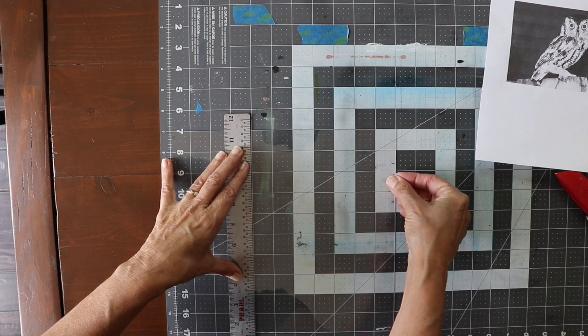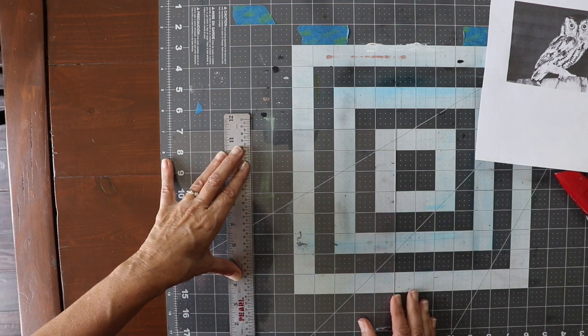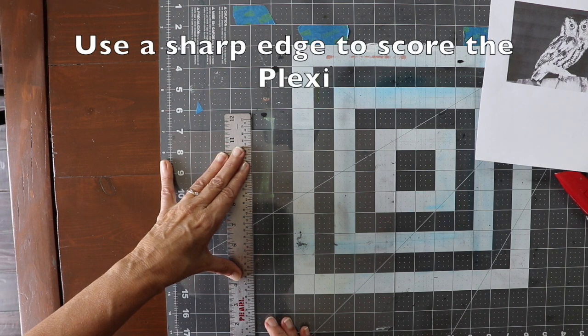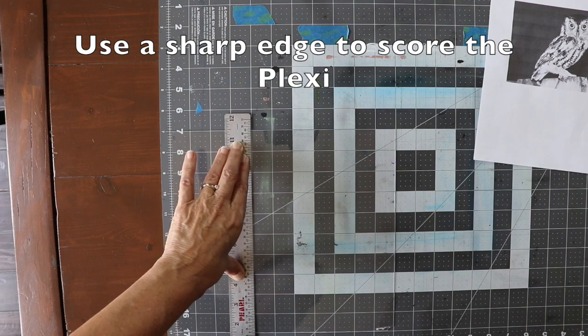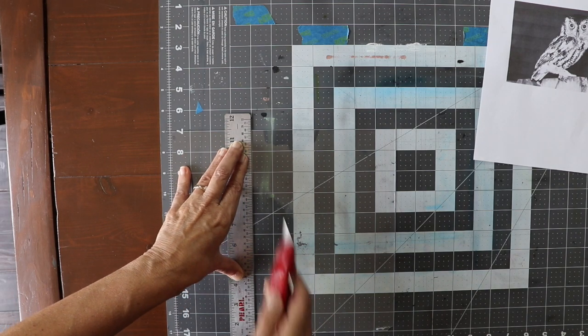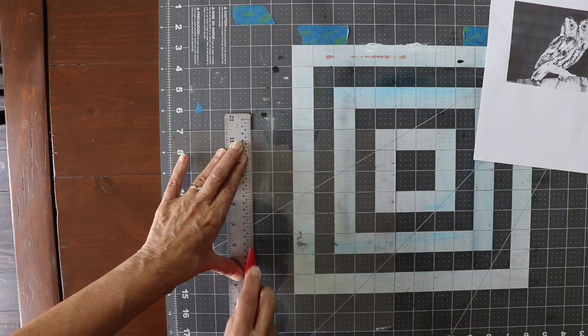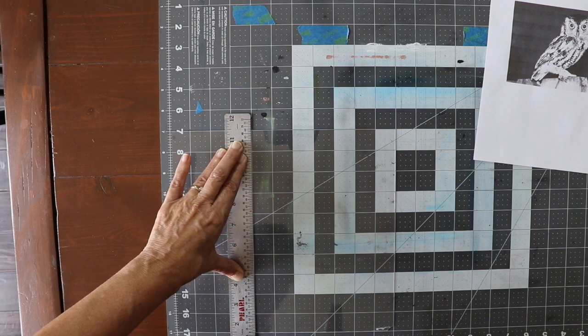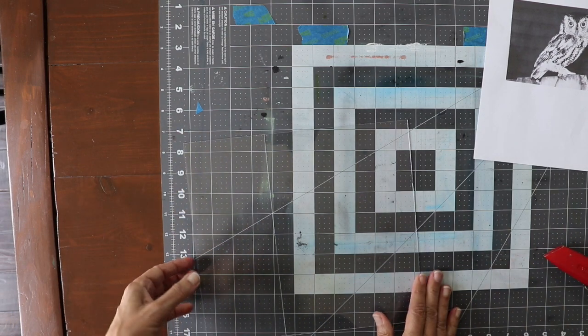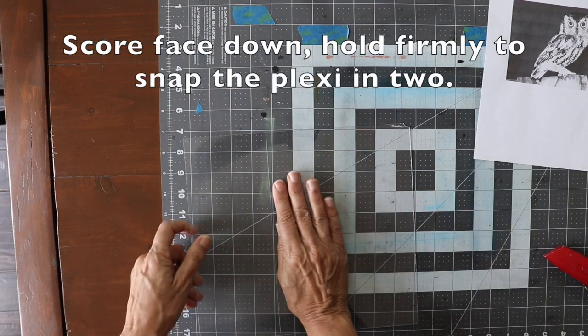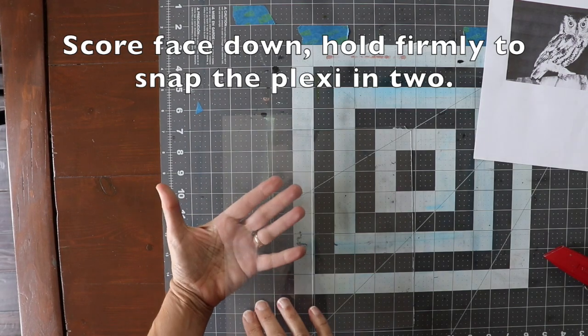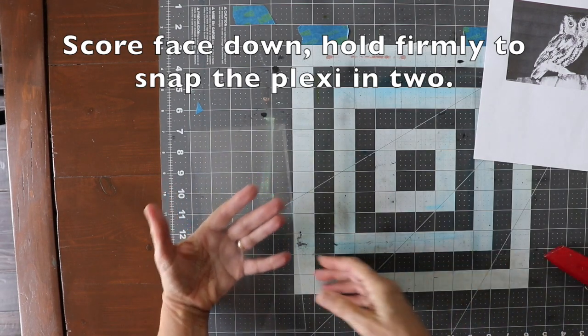And how I cut this plexi is I score it and then snap. So here's the score.